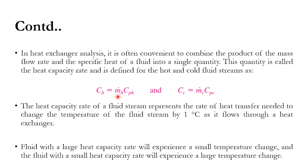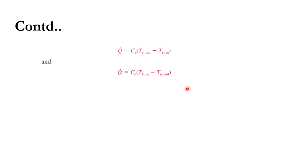For example, if we have 1000 kg/hr flow rate with a 20°C temperature change and we double the flow rate to 2000 kg/hr, the temperature change is halved to 10°C. So fluids with a large heat capacity rate experience a small temperature change, and fluids with a small heat capacity rate experience a large temperature change. Accordingly, Q = C_c · (T_c,out − T_c,in) and Q = C_h · (T_h,in − T_h,out).